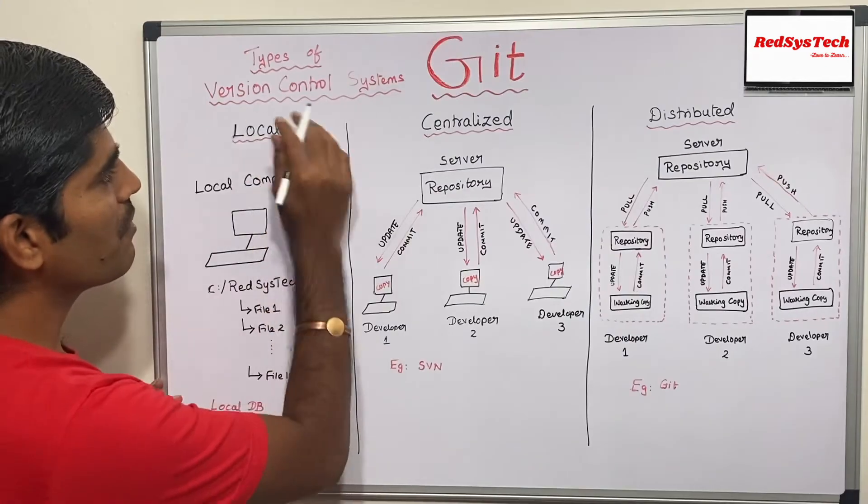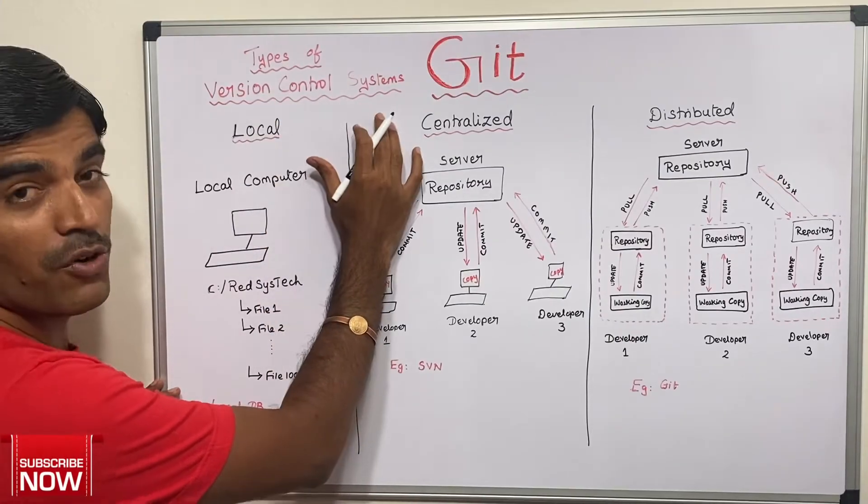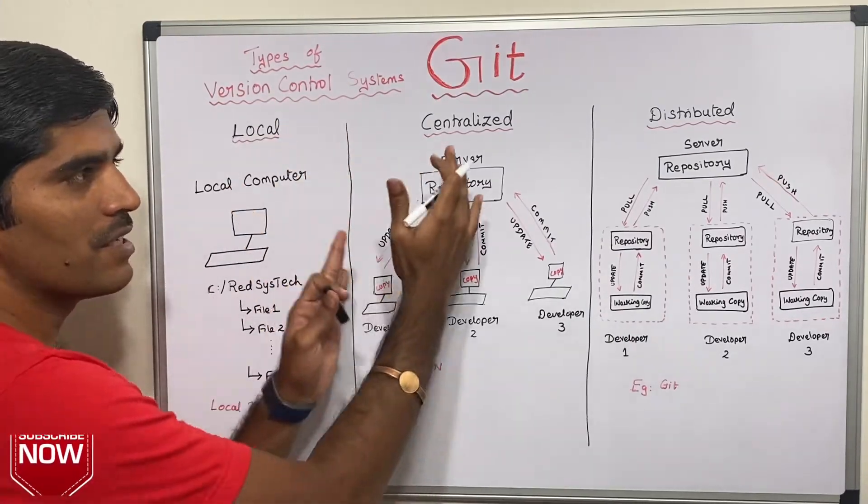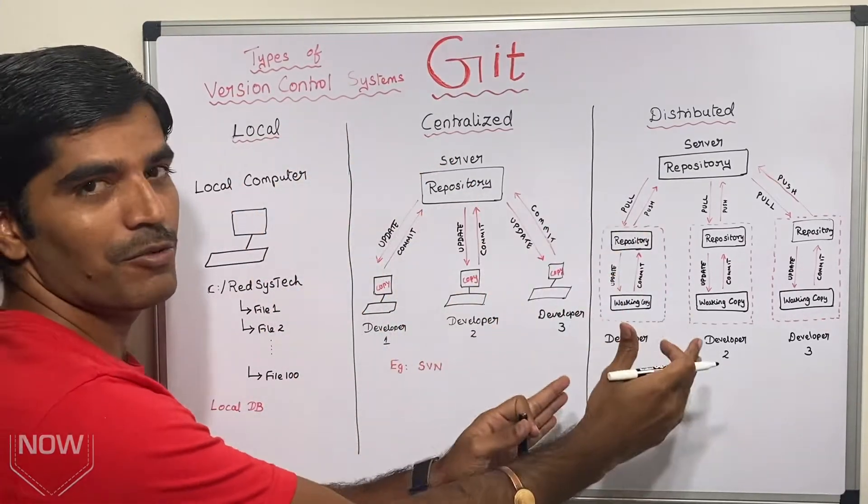When I say different types of version control systems, we have local, centralized, and distributed.